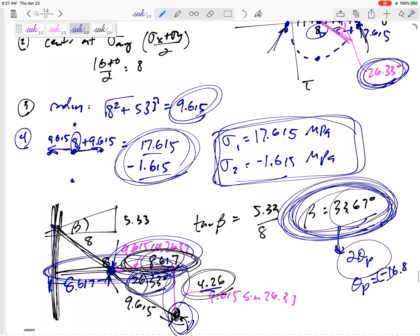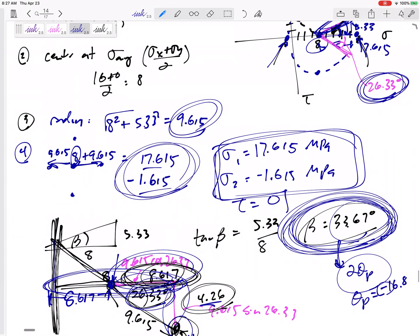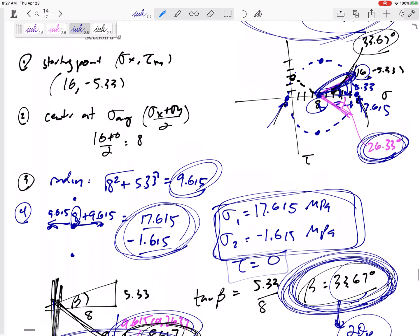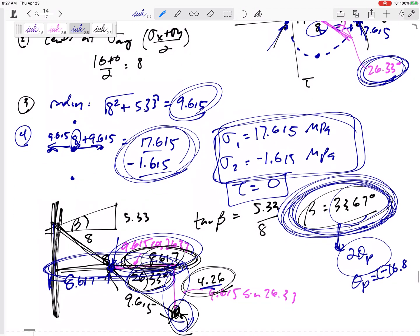So I can ask you the principal stresses and principal orientation. Also, what is tau here? Tau is zero when you have the principal stresses. And you knew that from your Mohr circle. What is the tau at this point right here? Zero.